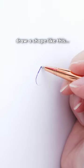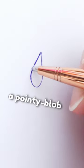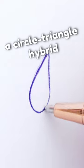Grab a ballpoint pen and draw a shape like this. A teardrop. A pointy blob. A circle-triangle hybrid if you will.